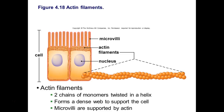The actin filaments are going to be smaller — they're actually two chains of monomers. Imagine two pearl necklaces twisted together; they form a dense web and are found underneath the plasma membrane to support the cell. Microvilli, which are structures that extend from cells such as the intestinal cells, are supported and kept stiff with the help of these actin filaments. The microvilli increase the surface area, which is why we find them in the intestines — to increase nutrition.